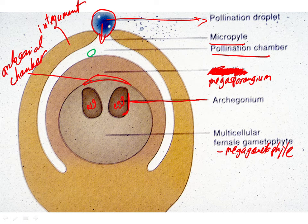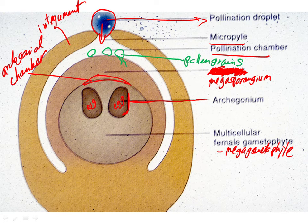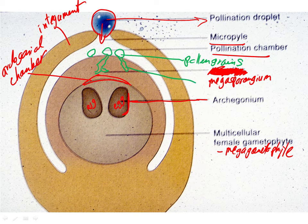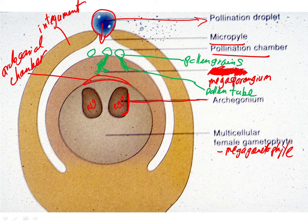Our pollen grains then come to lie on top of the megasporangium, and the pollen tube begins to grow out. The pollen tube can branch and do all kinds of things, but it slowly makes its way down toward the archegonial chamber. The pollen tube is growing down through the megasporangium, carrying the sperm with it. Eventually it reaches the archegonial chamber and releases the sperm into the water there, where mobile sperm swim and accomplish fertilization.